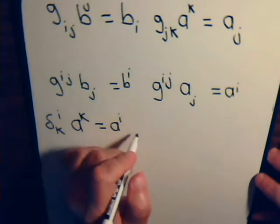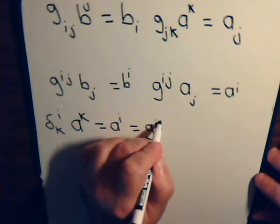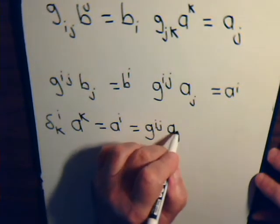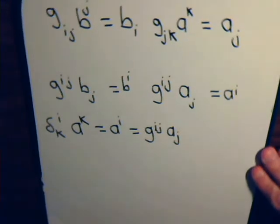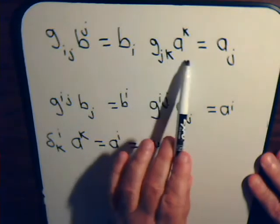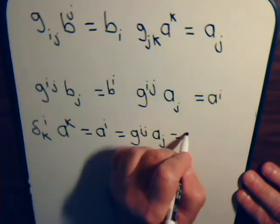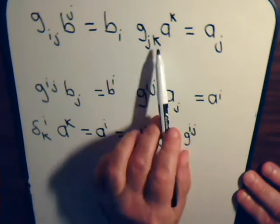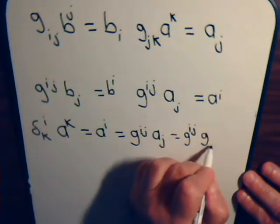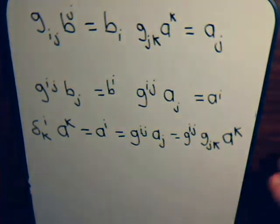So we can say that this equals G^IJ A_J, but if we want to we can express A_J like this, so this will equal G^IJ and then for A_J we'll put in G_JK A^K.